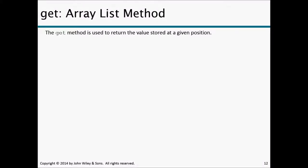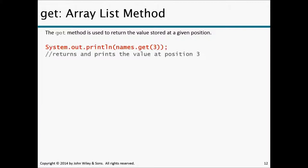The get method is used to return the value stored at a given position. For example, System.out.println(names.get(3)) gets the value at position 3 from the list 'names' and prints it.